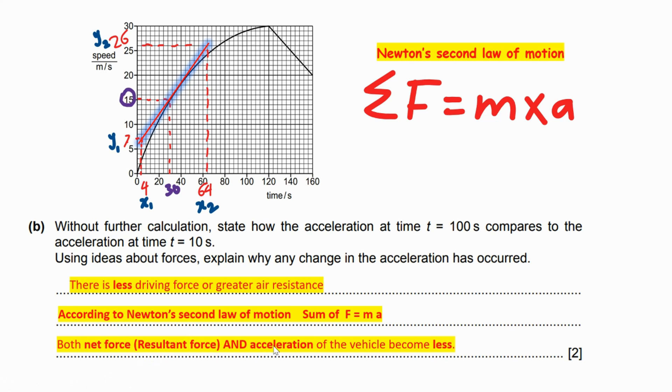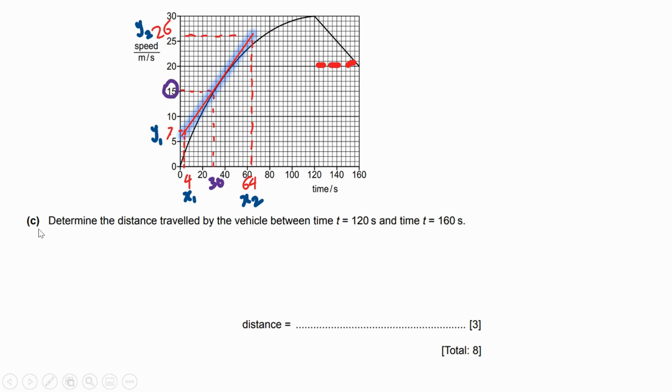Last section (c): determine the distance traveled by the vehicle between t equals 120 seconds and t equals 160 seconds. To answer to get three marks, first one is the distance traveled by the vehicle represented by the area under the graph. Where is the area under the graph? Here from 120 to 160, shade this area.